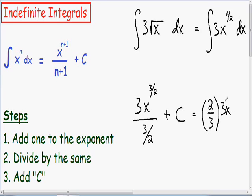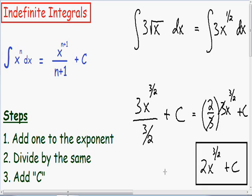Our 3x to the three-halves exponent stays the same, and we can't forget to add C. Now this can be simplified even further. Notice how we have a 3 in the denominator and a 3 in the numerator so they can cancel out, and the only thing that we're left with is 2x to the three-halves plus C. Now we have completely integrated 3 multiplied by the square root of x.